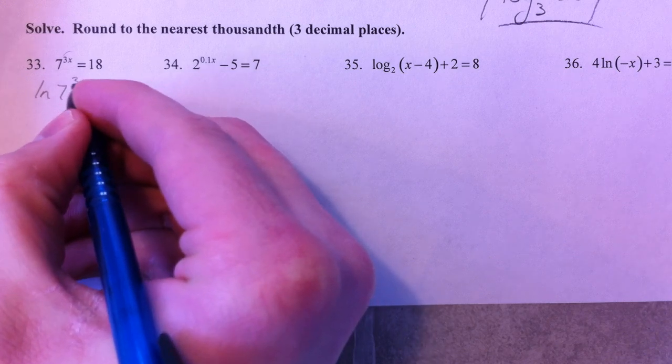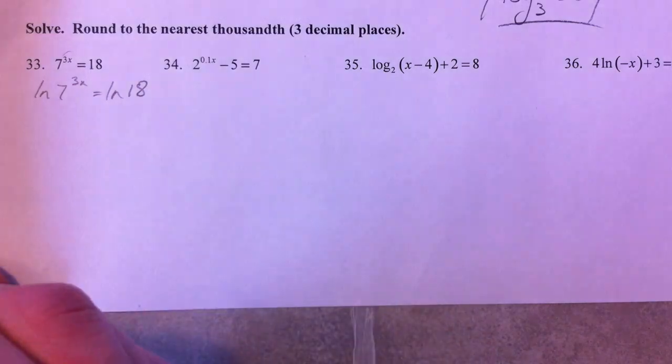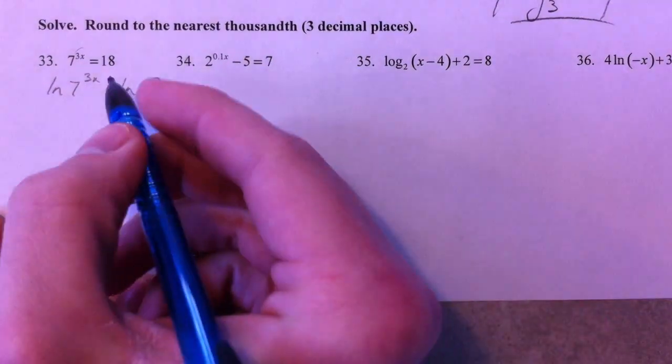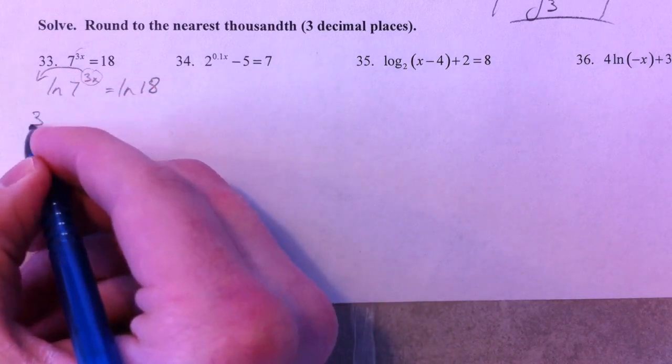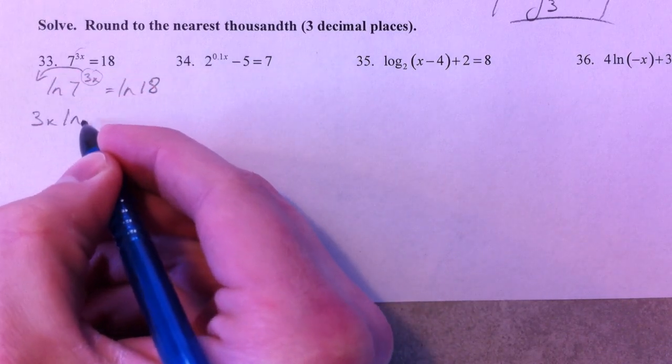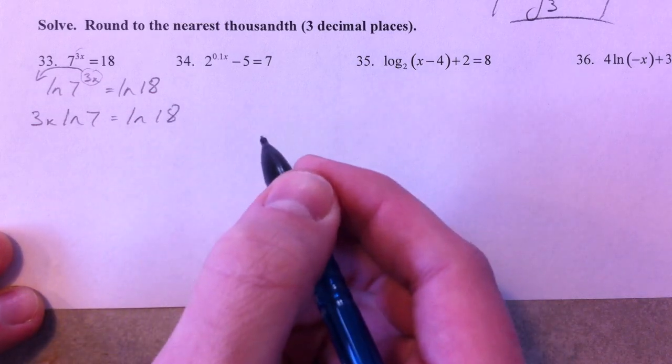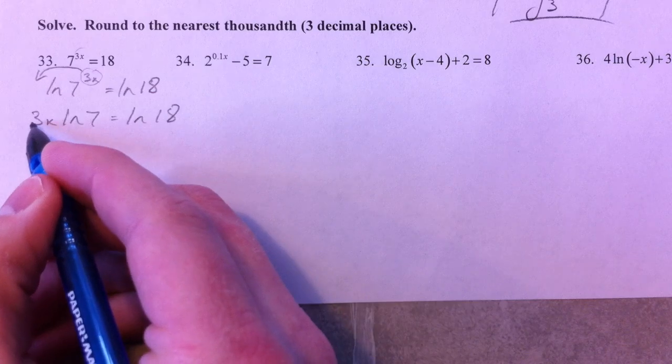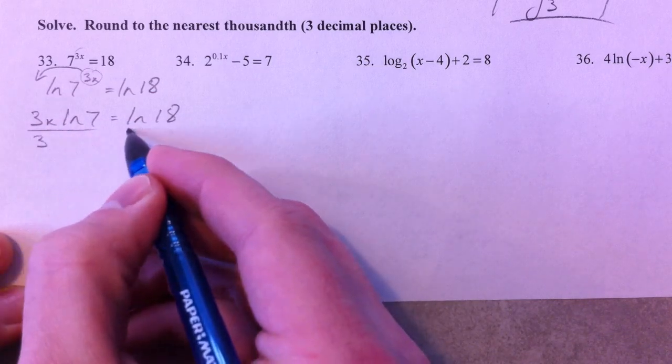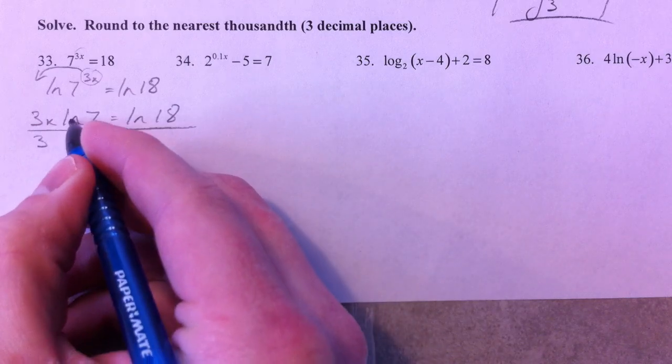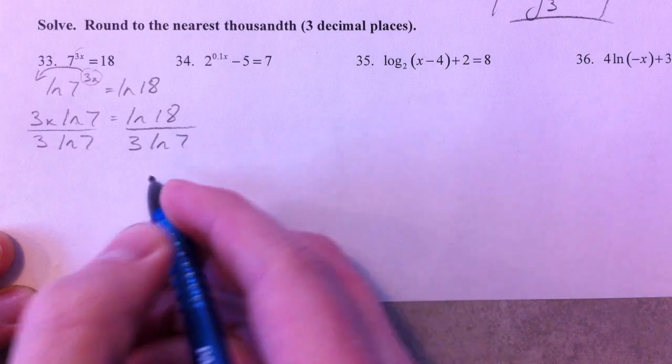I take the natural log because it takes less time to write. When we do this, the 3x is the exponent, and that last property of logarithms lets us bring the 3x out in front. Now, this is 3 times x, so I'm going to divide by 3. It's also 3x times the natural log of 7, so I'm going to divide by the natural log of 7 as well.